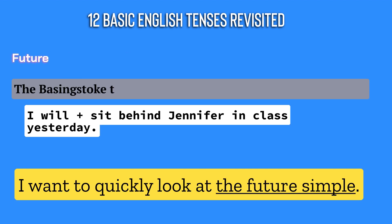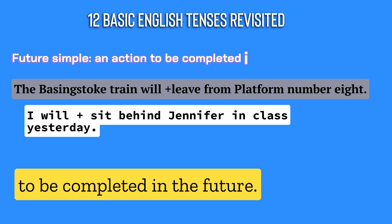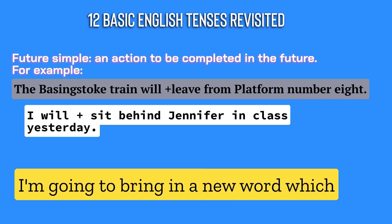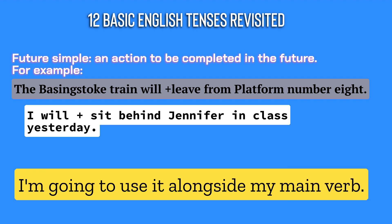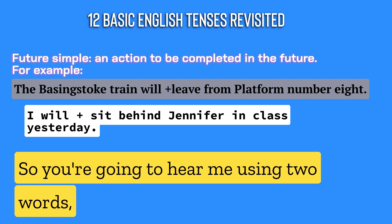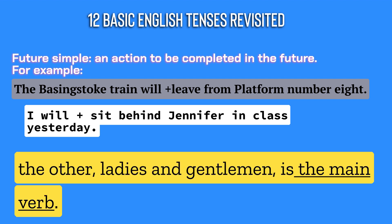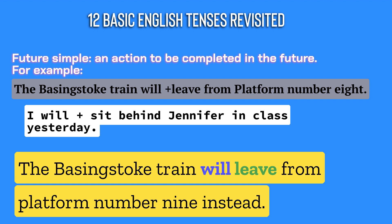I want to quickly look at the future simple. The future simple will describe an action to be completed in the future — bear in mind, it has not yet occurred. I'm going to bring in a new word, which is the verb 'to be' in the future, and I'm going to use it alongside my main verb. You're going to hear me using two words — one of which I will call an auxiliary, and the other is the main verb. 'I will sit behind Lucretia instead in class tomorrow.' 'The business truck train will leave from platform number 9 instead.'